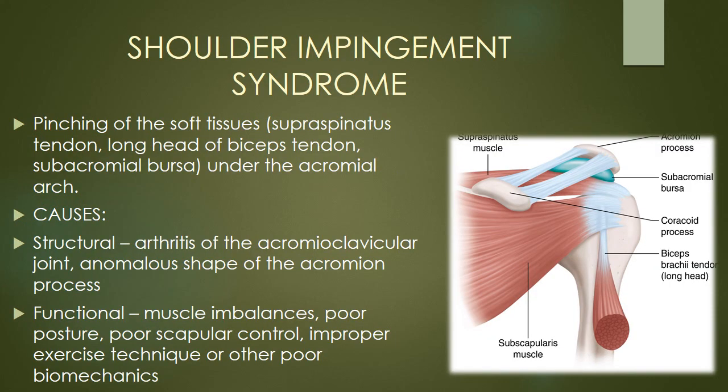Let's talk about shoulder impingement syndrome. If you've been in chiropractic practice for any length of time, there's a good chance you've encountered patients with shoulder impingement syndrome. And if you're a busy chiropractor doing osseous adjustments, there's a good chance you may have experienced it yourself. Shoulder impingement syndrome involves a pinching or compression of the soft tissues underneath the acromion process, which is known as the subacromial arch.